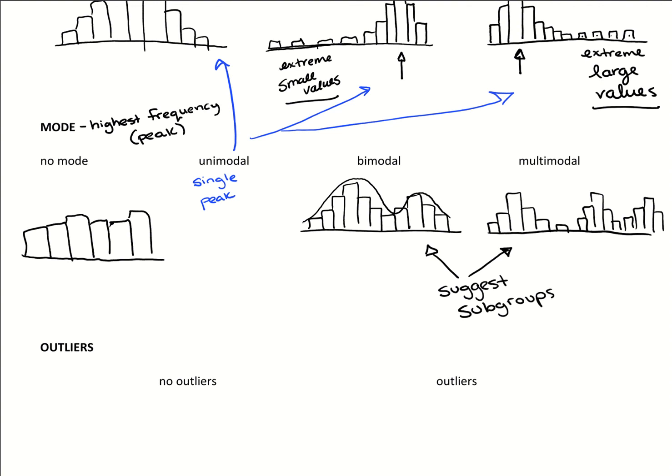So for example, say we were looking at fiber content in bread. So we go to a grocery store, we take a sample of 100 loaves of bread, collect their different fiber contents across different brands, and we make a graph.